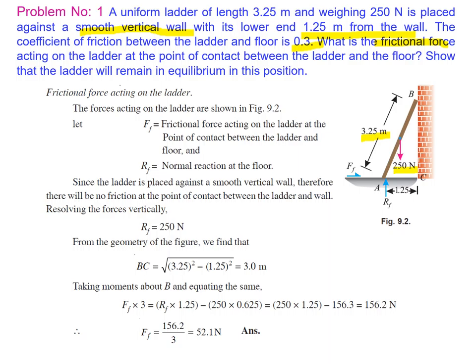The given data: length of ladder = 3.25 m, weight = 250 N acting through the center, coefficient of friction between ladder and floor = 0.3, and the lower end is 1.25 m from the wall. The lower end is A and the upper end is B. Since the ladder tends to move outward, the frictional force FF acts inward at A. Applying summation Fy = 0 for the vertical forces RF and 250 N, we get RF = 250 N.